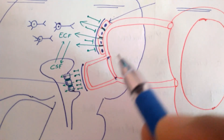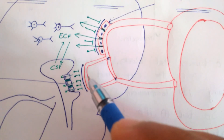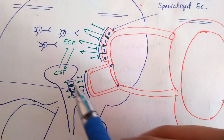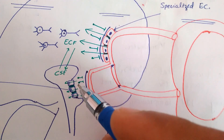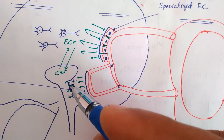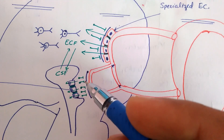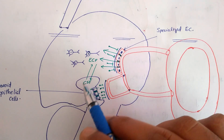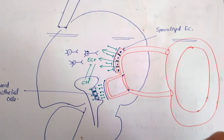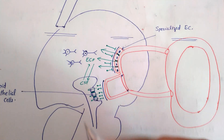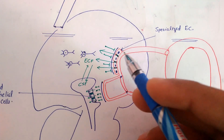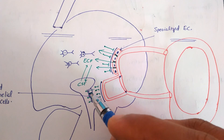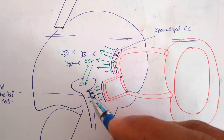When we come to the blood-CSF barrier, we have the microcirculation, the basement membrane, and the glial cells. The ventricle is lined by ependymal cells, and there are specialized ependymal cells known as choroid epithelial cells, which have tight junctions that do not allow entire blood to enter into the ventricle. So the cerebrospinal fluid is formed there. To summarize: in the blood-brain barrier, the barrier is at specialized endothelial cells with tight junctions; in the blood-CSF barrier, it is at choroid epithelial cells with tight junctions.